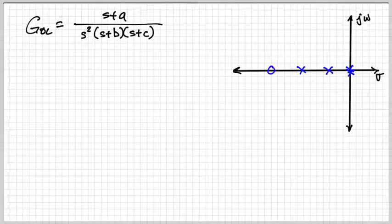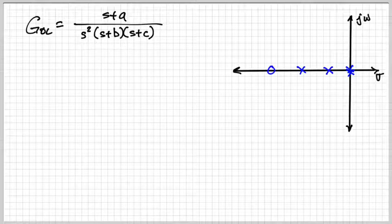Without knowing those exact values we don't know where exactly the zero and the poles will fall, but we do know that there's a repeated pole at the origin.